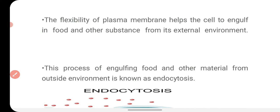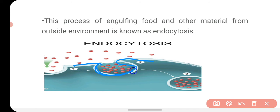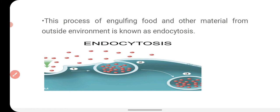The flexibility of the plasma membrane helps the cell to engulf food and other substances from its external environment, because the cell membrane has the capability to fold and invaginate. It then pinches off, forming a container within the cell membrane. When the cell membrane invaginates and makes a cycle to intake a substance, that process is called endocytosis.